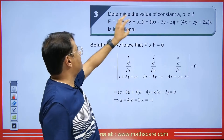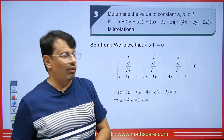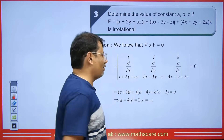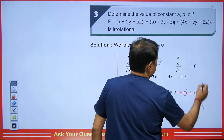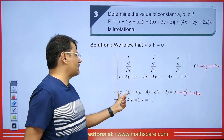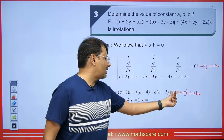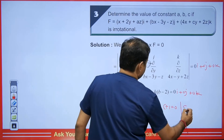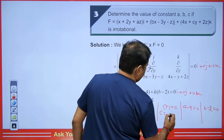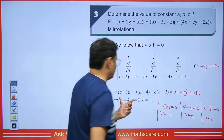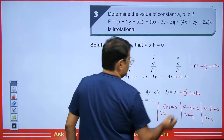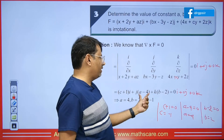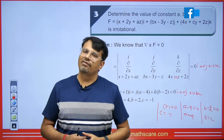Next question: determine the values of constants a, b, c if the vector is irrotational. If f is irrotational, its curl = 0, so we write the determinant equal to 0i + 0j + 0k. When we expand the determinant, comparing coefficients: the coefficient of i gives c + 1 = 0, so c = −1; the coefficient of j gives a − 4 = 0, so a = 4; the coefficient of k gives b − 2 = 0, so b = 2.